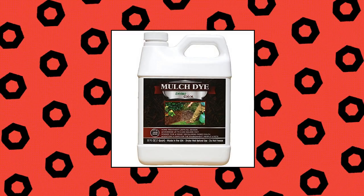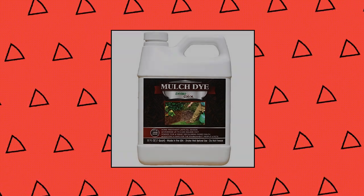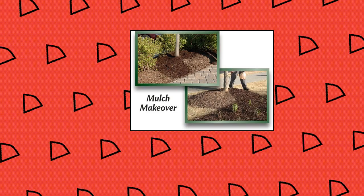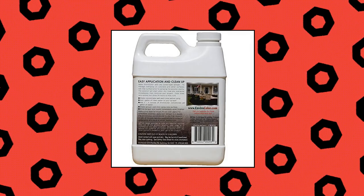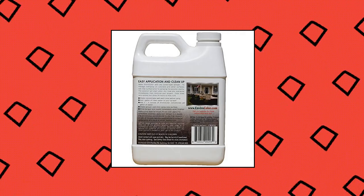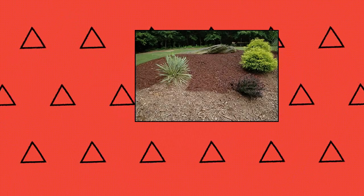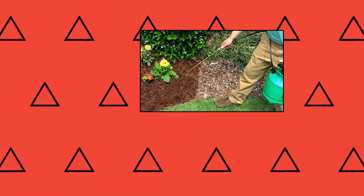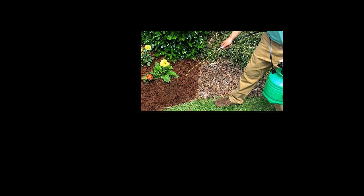Enviro color CB0032 cocoa brown mulch dye, 2400 square feet. Restore your mulch to look better than new, refresh your landscaping anytime. Apply with pump sprayer, no need to replace faded mulch, simply spray the color back onto it. Instant curb appeal for pennies per square foot. Covers up to 2400 square feet when used as directed. Safe for plants, pets and people.